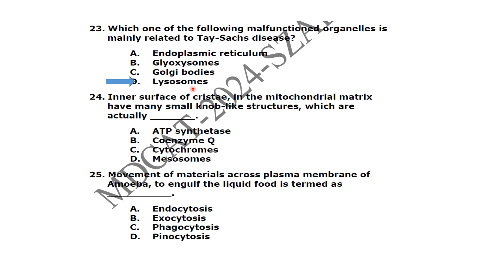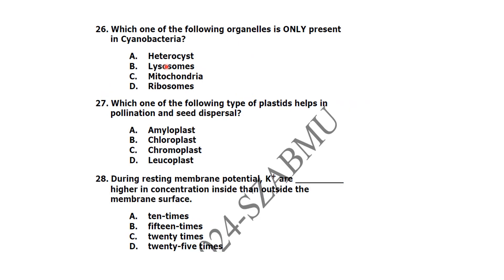On the surface of the cristae in the mitochondrial matrix there are many small knob structures which are actually the ATP synthase. Movement of material across the plasma membrane of a cell to engulf liquid food is termed as pinocytosis. Which one of the following organelles is only present in cyanobacteria? Heterocysts are present only in cyanobacteria — no lysosomes, no mitochondria.